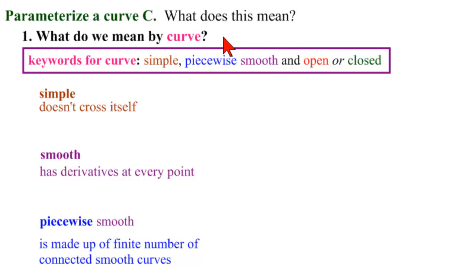First step, what do we mean by curve? We mean, and these are our keywords, a simple, if not completely smooth, at least piecewise smooth, and we will decide whether it's open or closed.